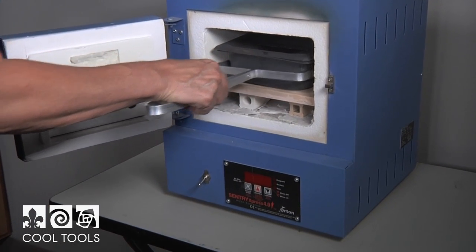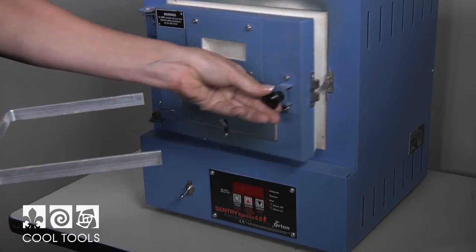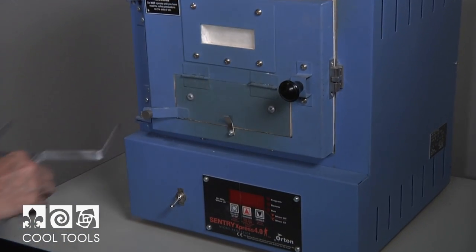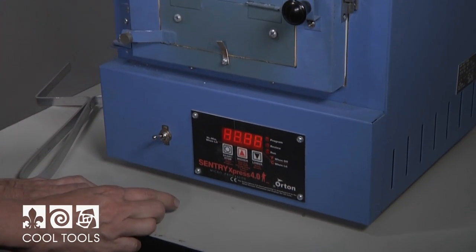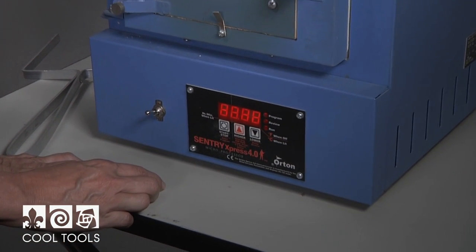Program the kiln for the long schedule. Ramp the kiln at 500 degrees per hour until it reaches the target temperature of 1550. Once at 1550, we hold that temperature for a full two hours.